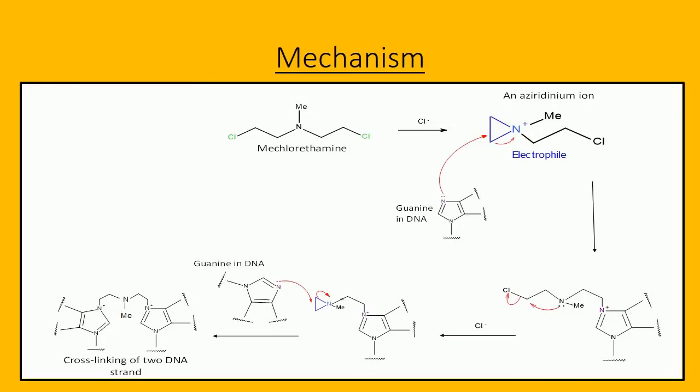Once in the body, mechlorethamine undergoes internal molecular changes to form an aziridinium ion, which contains a three-membered ring. The aziridinium ion is a strong electrophile which reacts with nucleophilic sites in the DNA. The DNA base has a nucleophilic nitrogen that reacts with the aziridinium ion formed from the nitrogen mustard, followed by the formation of a second aziridinium ion. When the two DNA strands are linked together, cell division is stopped and the cell dies.